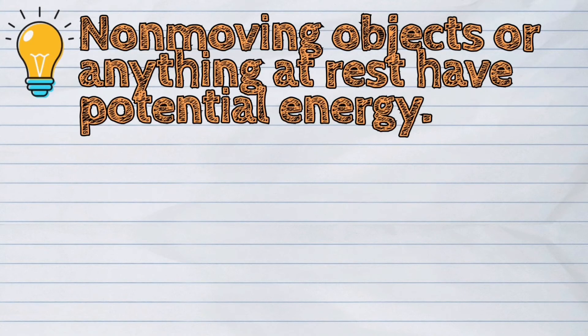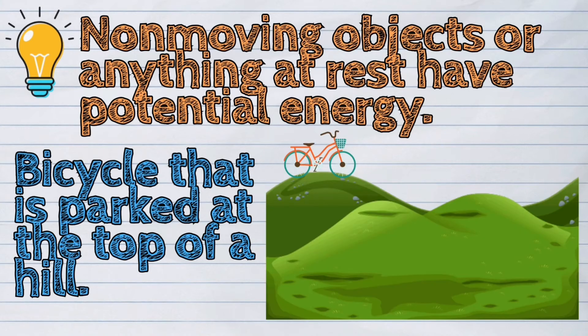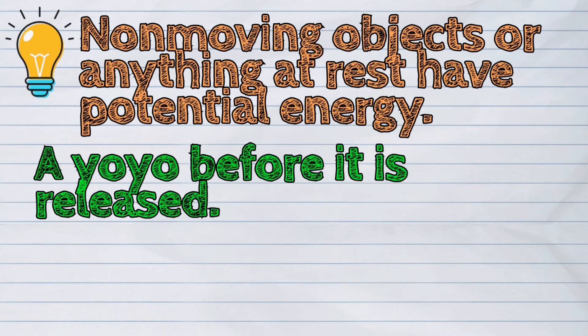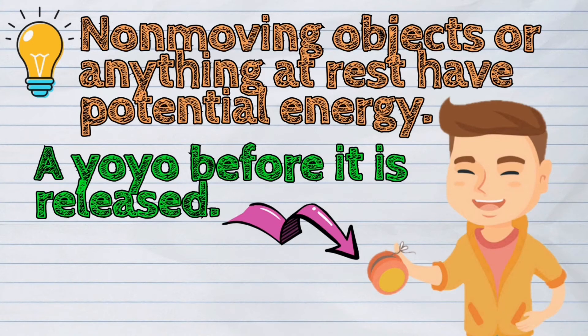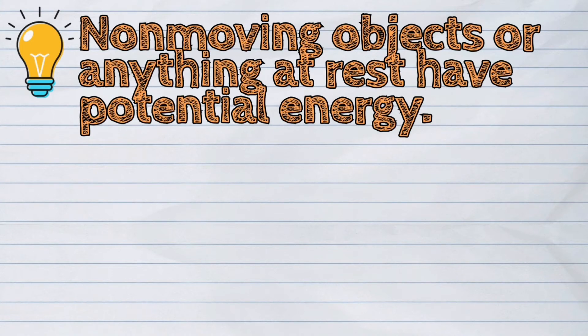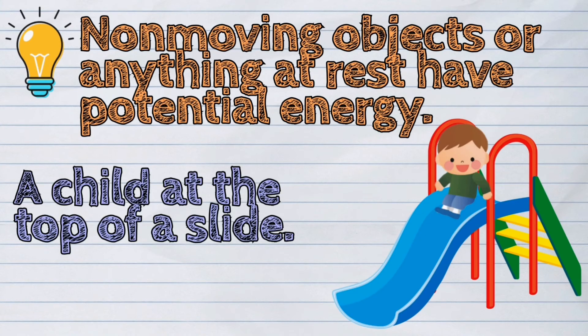Non-moving objects or anything at rest have potential energy, like a bicycle that is parked at the top of a hill, a yo-yo before it is released, and a child at the top of a slide.